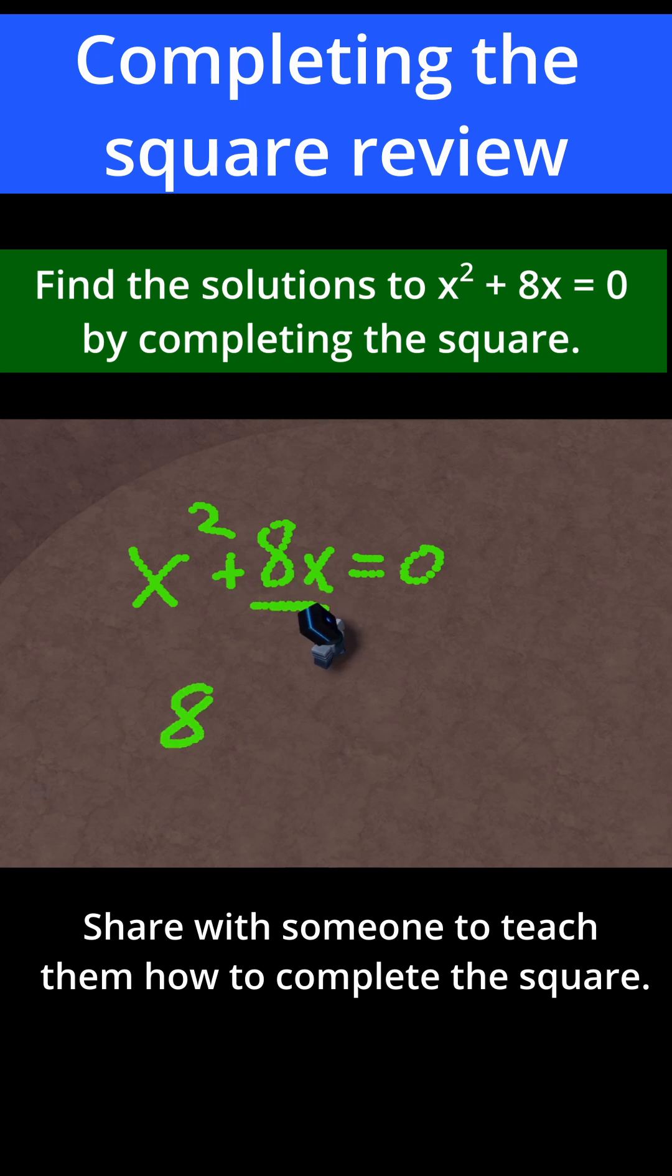Now there are two steps you need to do to complete the square. The first step is divide the number by 2. 8 divided by 2 is equal to 4. Then the next step is you have to square that number. So now you have 4 squared, and that's equal to 16. This is the number you're going to use to complete the square.